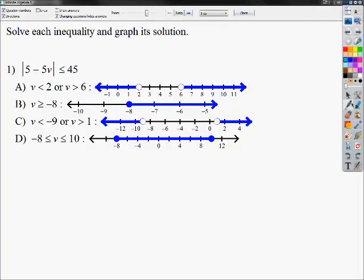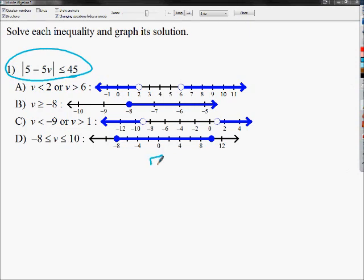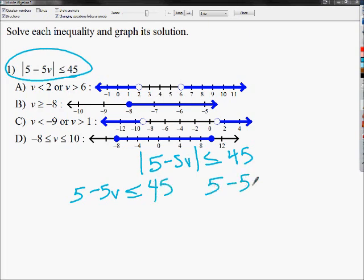I thought I would start with number one. In this problem, I've got an absolute value inequality right here. So what I need to do is split that problem into two statements that I can solve. I can't solve an absolute value without splitting it into two parts. The first one, I'm going to take what's in the absolute value, and I'm going to set it equal to whatever's already there, so less than or equal to 45.